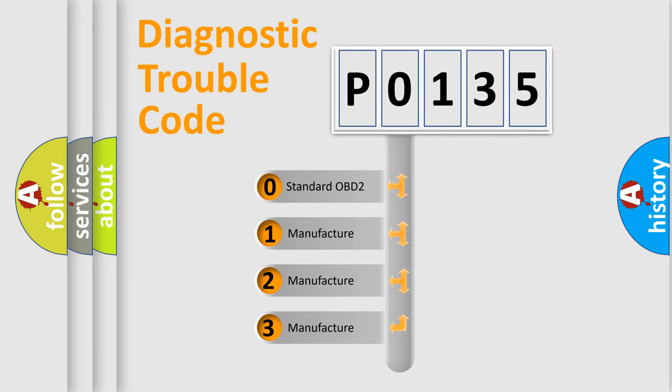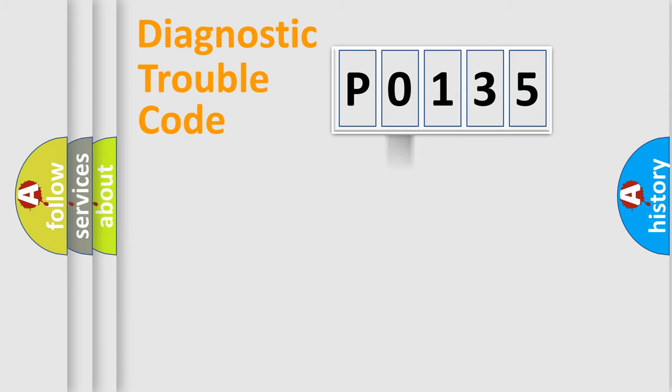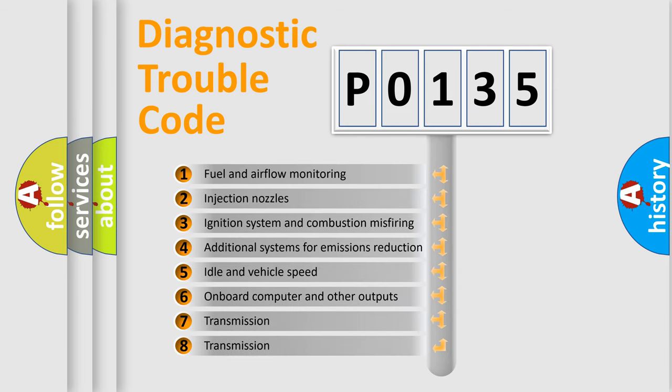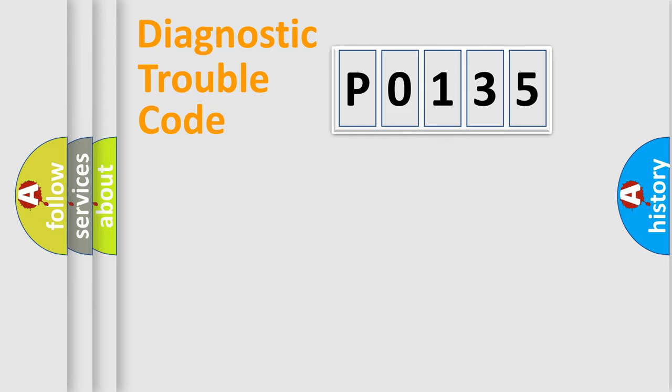If the second character is expressed as 0, it is a standardized error. In the case of numbers 1, 2, 3, it is a car-specific error. The third character specifies a subset of errors. The distribution shown is valid only for the standardized DTC code.